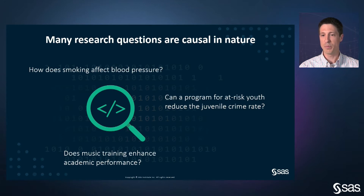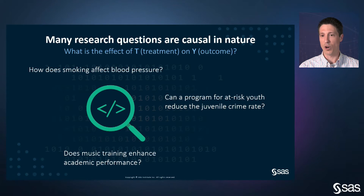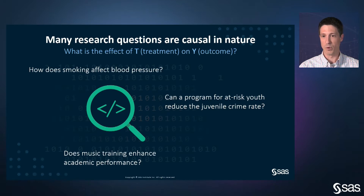In all these cases, there is a treatment or exposure T and an outcome of interest Y. The goal of a causal analysis is to quantify the causal link between T and Y. Note that this causal link represents a stronger claim than a purely predictive association between a pair of variables. In other words, the goal is to understand what would happen to the outcome variable if you were to intervene and change the treatment variable, for example by applying or removing the treatment. Causal analysis is not limited to settings in which it is possible to conduct a randomized controlled experiment.